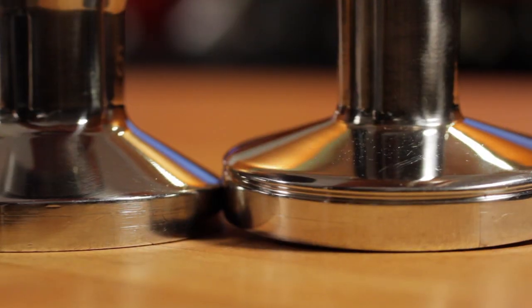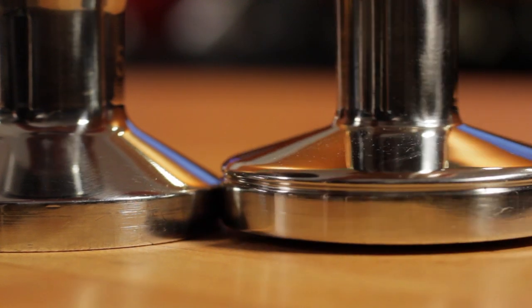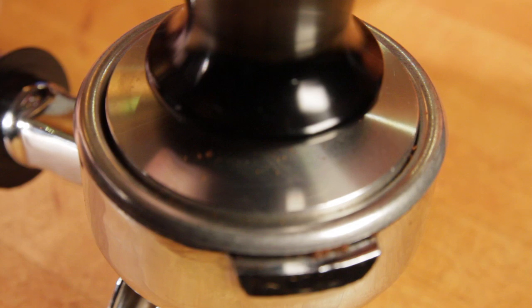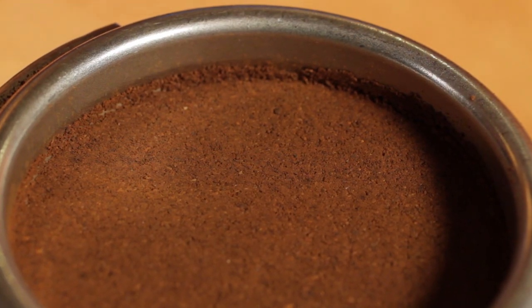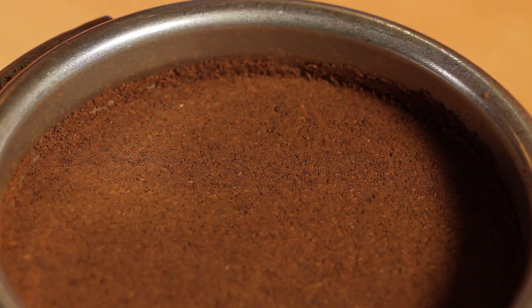Next, determine if you want a flat or convex bottom. Flat bottoms are traditional, but a nice even tamp is critical to a good extraction. Convex tampers make it easier to get a tamp that's even from side to side. And because the convex shape results in a tamp that's higher on the sides, the theory is there's less chance of brew water channeling around the edges of your filter basket.